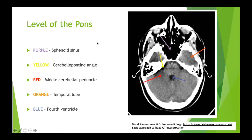Moving up to the level of the pons, you can appreciate the fourth ventricle nicely. The fourth ventricle is a useful landmark - it gives a clue if there's mass effect in the posterior fossa. If there's an extradural or small subdural there, especially if a few days old, you may miss it because the density of older blood can be very similar to brain. But if the fourth ventricle shows mass effect or midline shift with effacement, that's your clue. You can also appreciate the prepontine CSF, the temporal lobe tips, and the sphenoid sinus.